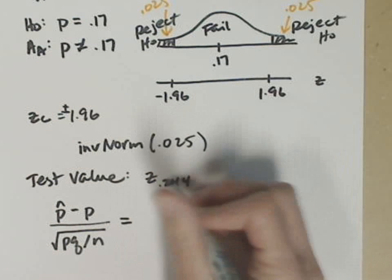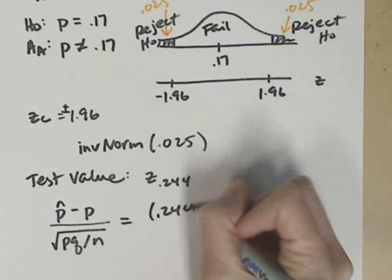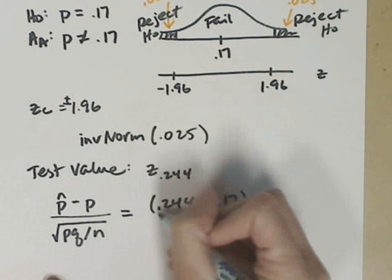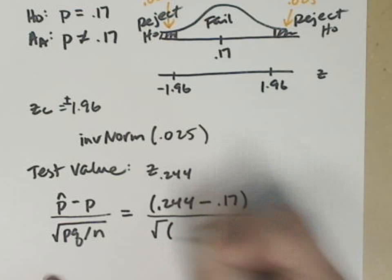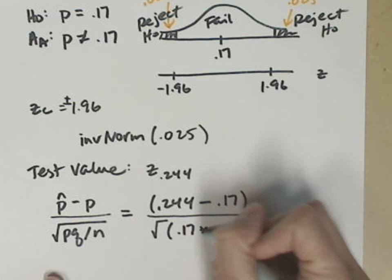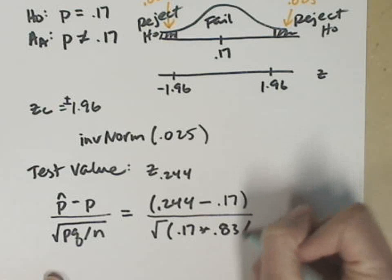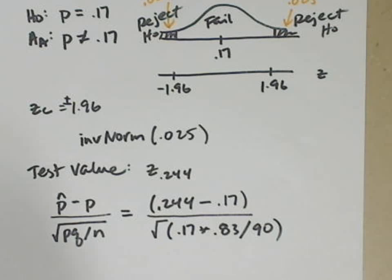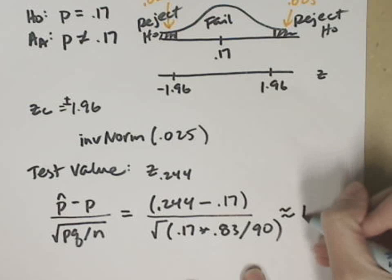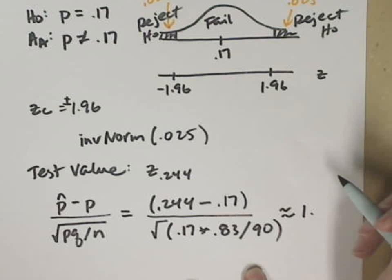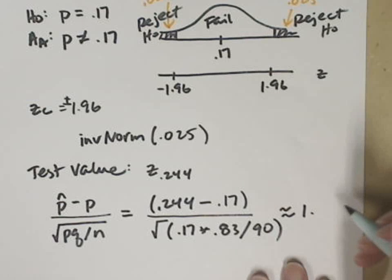My z-score for .244 is .244 minus the hypothesized percentage, which is .17, divided by the square root of p times q, so .17 times .83, divided by n, which is 90. So I'll put that into my calculator, just like I've got there, including parentheses and everything. We get 1.868, so how about 1.87 if I round that.